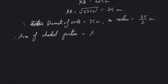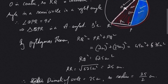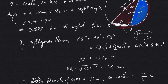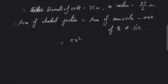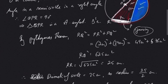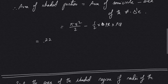The area of the shaded portion equals the area of the semicircle minus the area of the right triangle. The area of the semicircle is πr²/2, and the area of the right triangle is (1/2) × base × height, where the base is PR and the height is PQ.